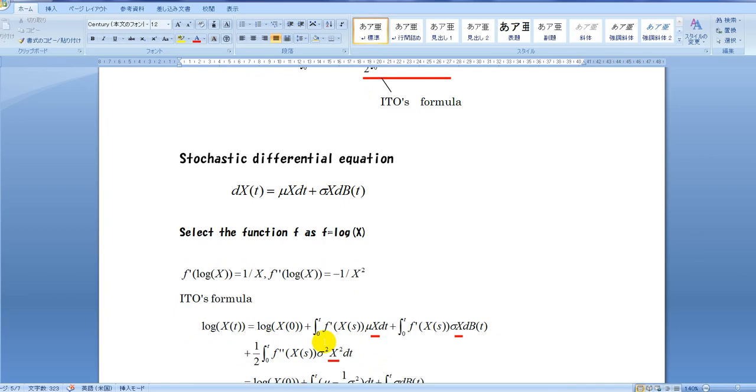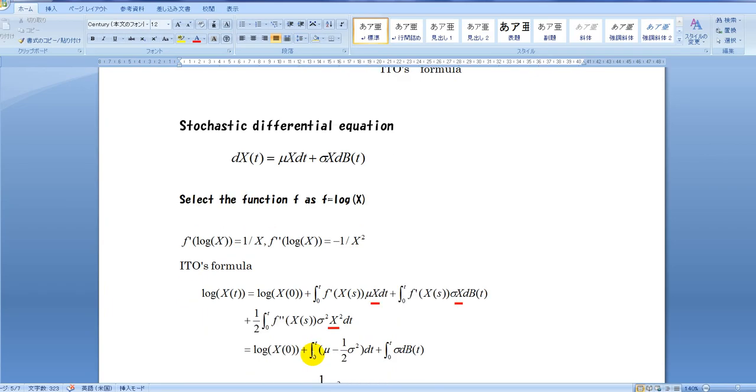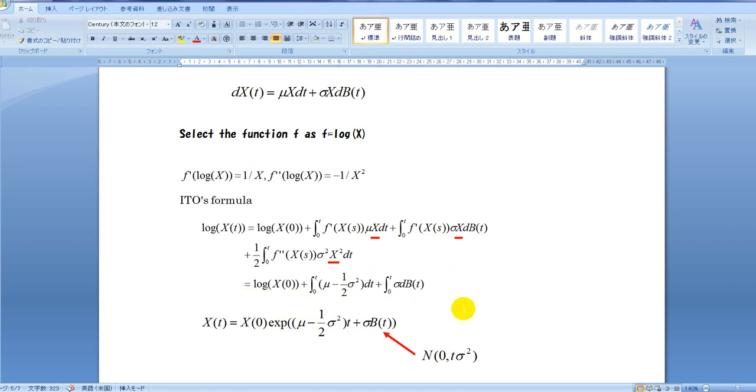Applying the Ito formula and paying attention to log function property, log X is obtained like this. And X(t) is solved in beautiful manner. Where the sigma T is a probability value that obeys the normal distribution. This is the result.